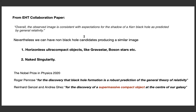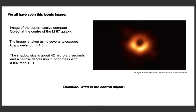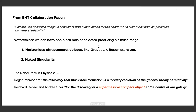The Event Horizon Telescope clearly states that the observed image is consistent with the expectation for the shadow of a Kerr black hole as predicted by general relativity. However, it is also consistent with other non-black-hole candidates — for example, horizon-like compact objects, something called a gravastar or boson star, which can also produce similar light ring images.